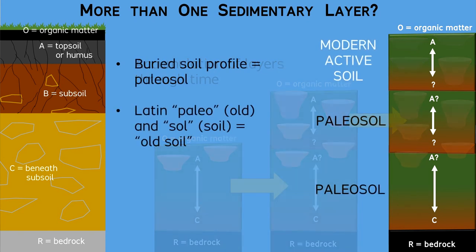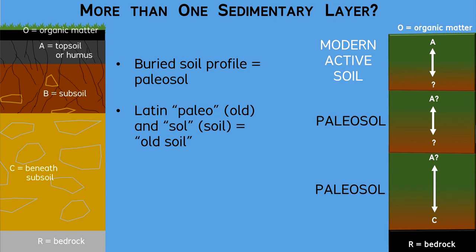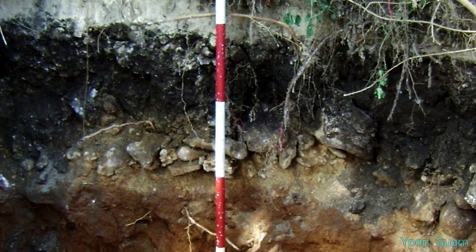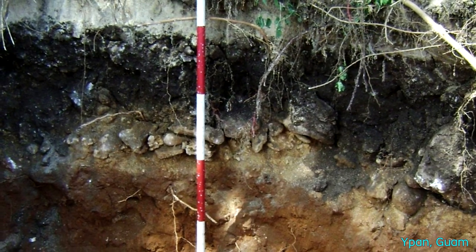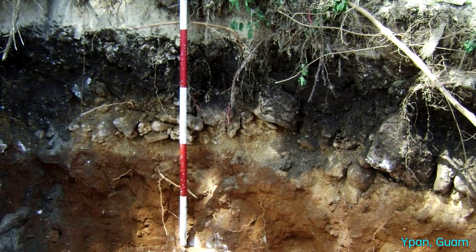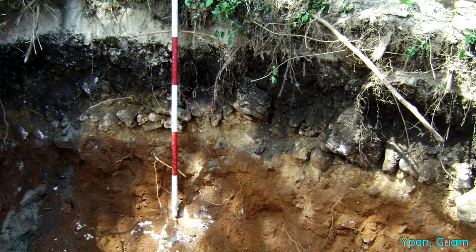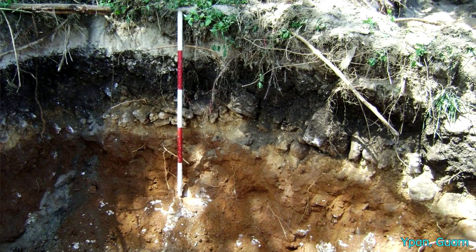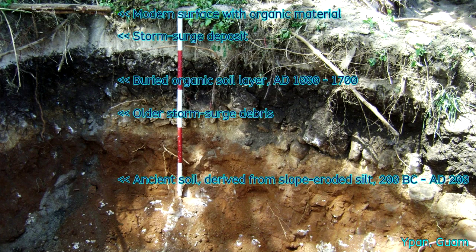A buried soil profile can be called a paleosol or old soil. Its internal characteristics tend to be less clear than can be seen in a modern active soil profile. Here you can see an example where a few different soil horizons developed over one another. Periodic storm surge episodes brought layers of beach sand and coral debris over this area, effectively interrupting the soil forming process each time.